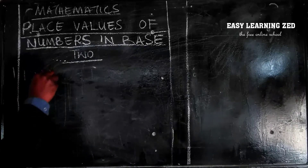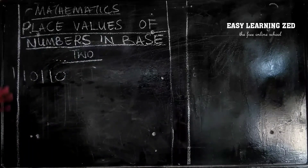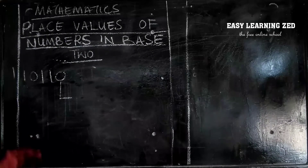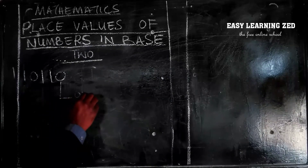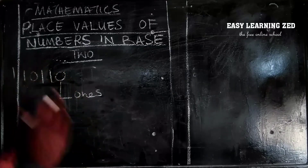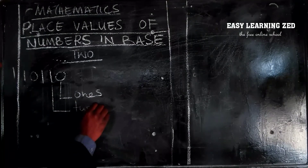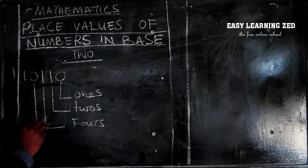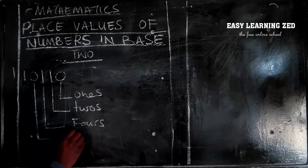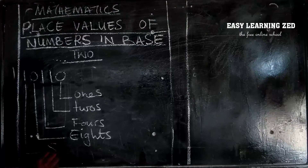So, number one — I have this number: 1 0 1 1 0. This number has five digits. We are asking: what is the place value of zero in this number? The number at the right end of the number has the place value of ones. In all number bases, the first number on the right side has the place value of ones. Then moving left: this one has the place value of twos, then fours, then eights, then 16s.